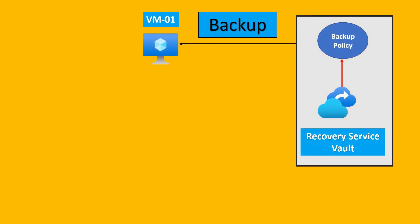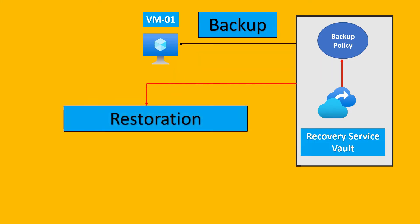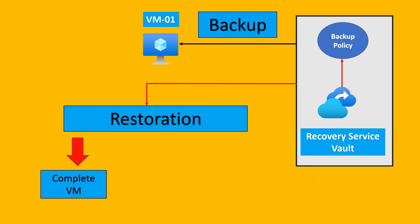Using restoration we can roll back our application or virtual machine to the previous state where it was working. So that is the reason we are going to perform this restoration job. If you see the details in diagrams, we have virtual machine zero one for which we enabled the backup using a Recovery Service Vault with a backup policy. In restoration, we have three types in Azure.